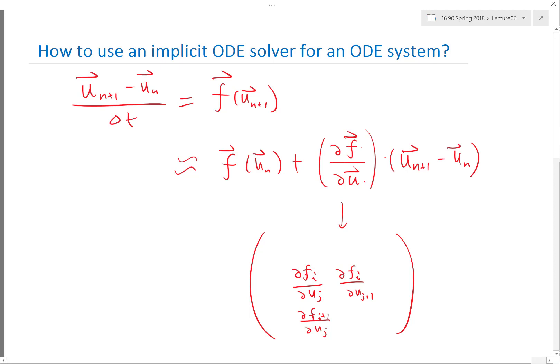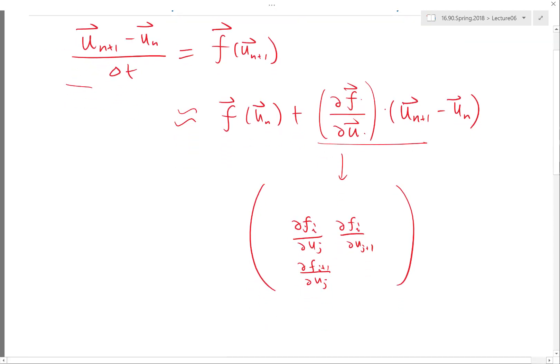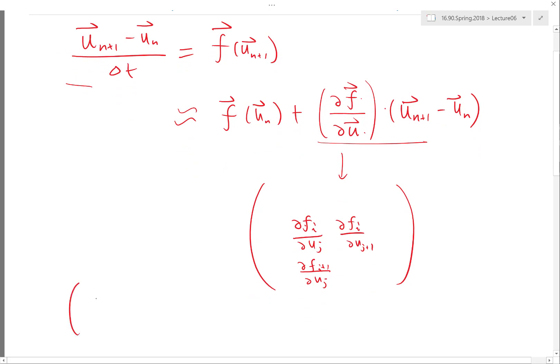This times the vector of u_{n+1} minus u_n. This is still a linear equation, but now it's a system of linear equations, or it's a matrix equation. To solve this, you have to pull these two unknown terms to the left-hand side.